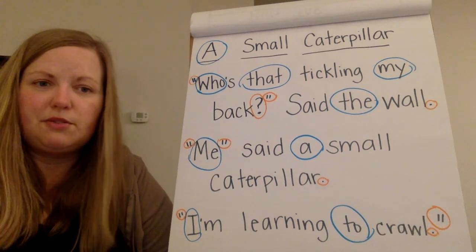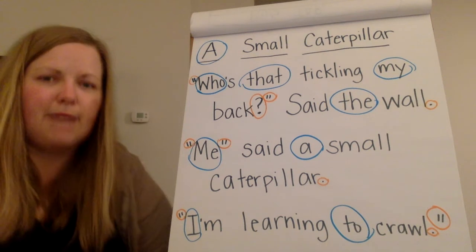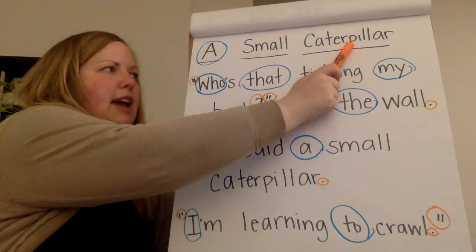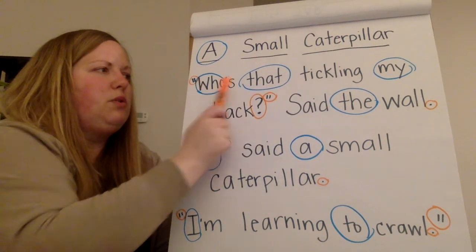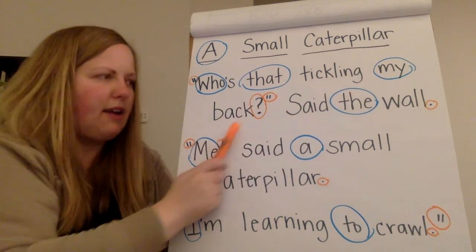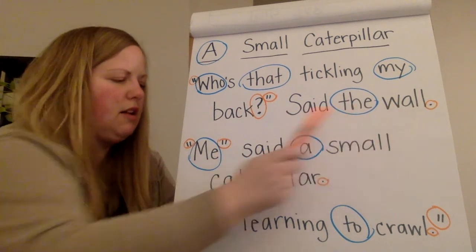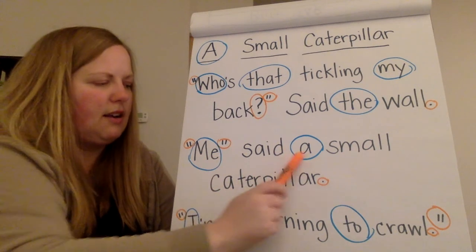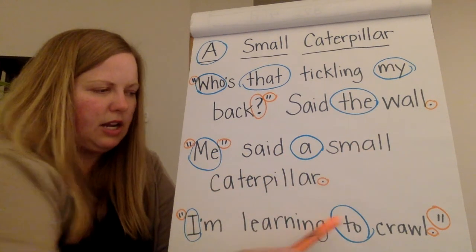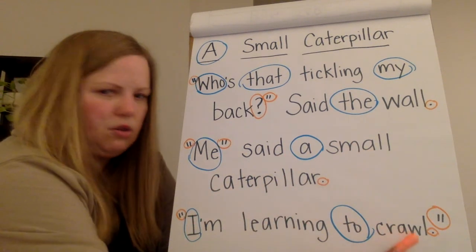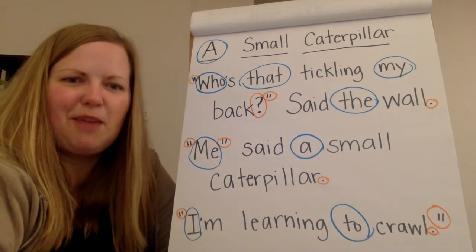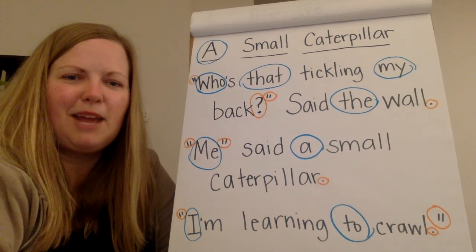So let's read through this poem one more time. A small caterpillar — who's that tickling my back said the wall. Me said a small caterpillar. I'm learning to crawl. All right, I hope you enjoyed the poem. Have a great rest of your day. Bye!